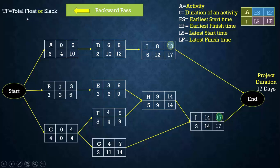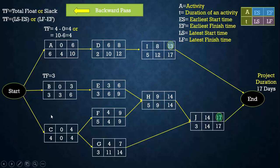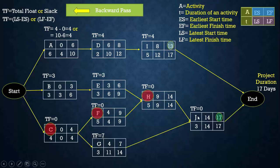Now we will find the total float or slack value. Total float is the difference between latest start and earliest start, or equivalently the difference between latest finish and earliest finish. For activity A it is 4 minus 0, which is 4, or 10 minus 6, also 4. We can find the total float for all activities similarly. For activities C, F, H, and J, the total float is 0, making them critical activities — they cannot be delayed even a single day without extending the total project duration.